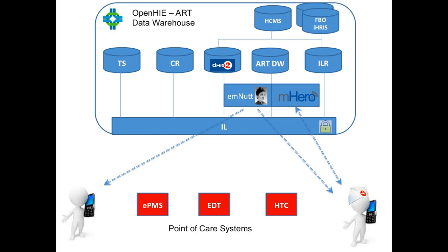With all these various pieces together, we have our OpenHIE architecture with high promise for integrating multiple systems and improving the clinical care and clinical outcomes for ART services. One final note: the ART data warehouse here, if you look at the OpenHIE architecture diagrams, would play the role of the shared health record — we're just looking at the ART use cases rather than the full gamut of clinical information that could potentially be stored in the data warehouse.